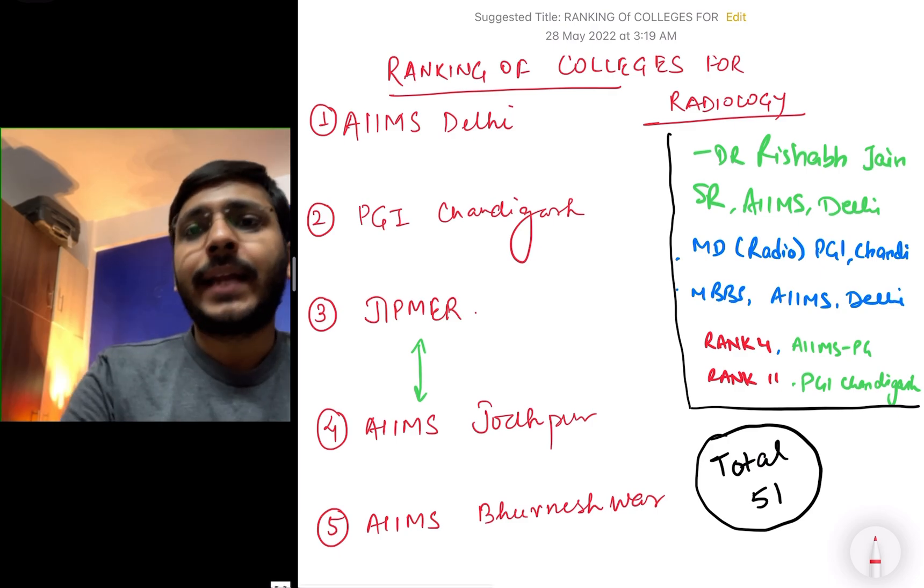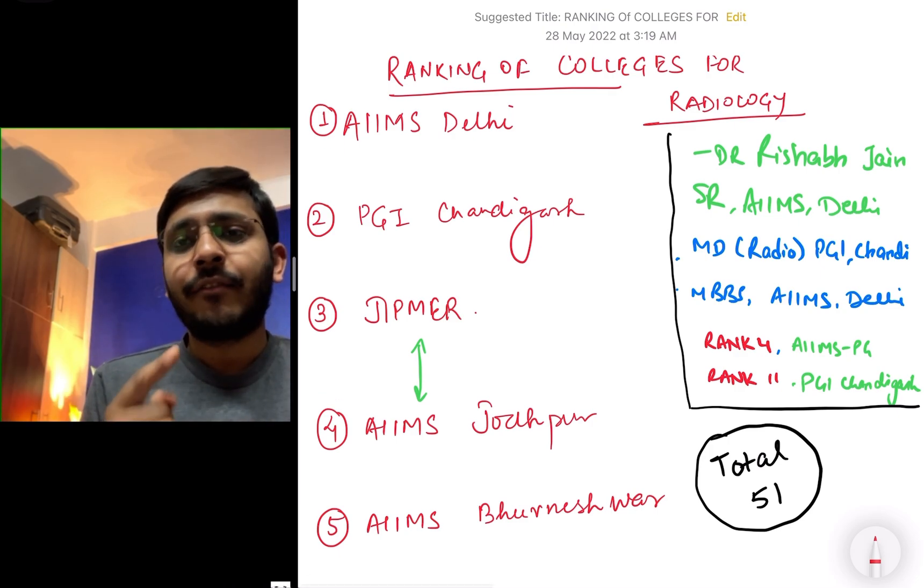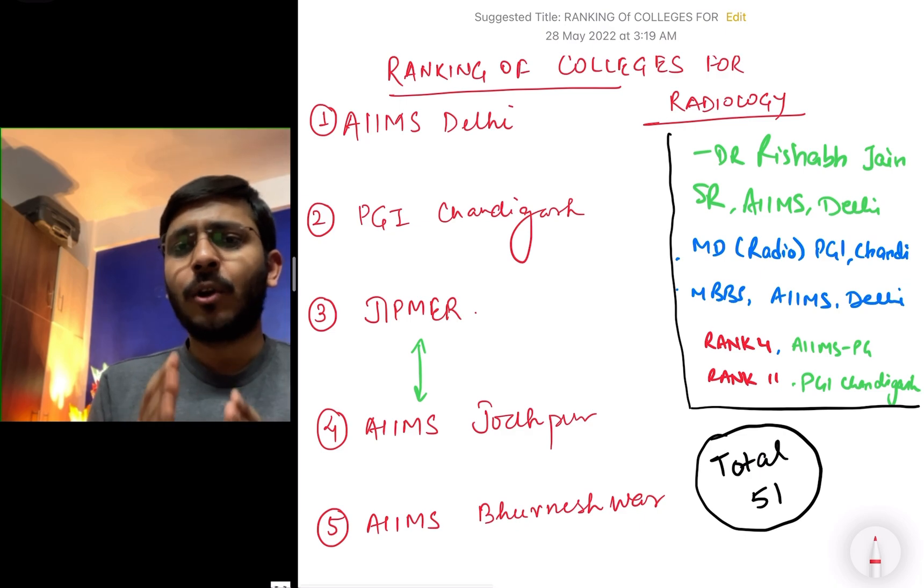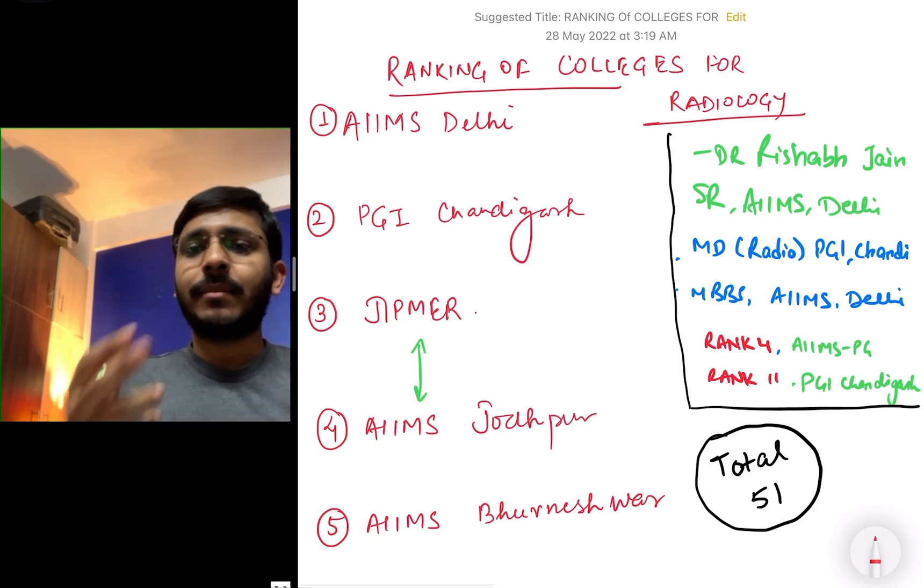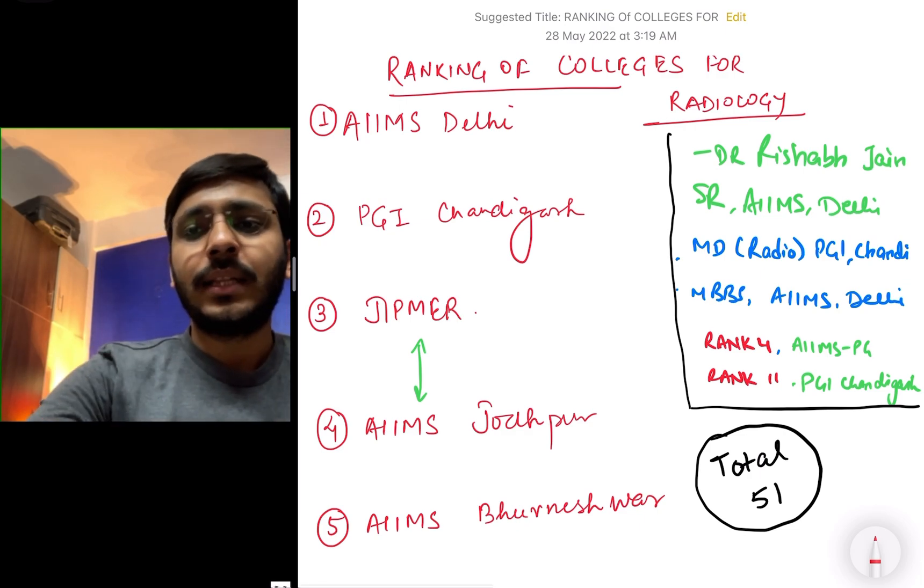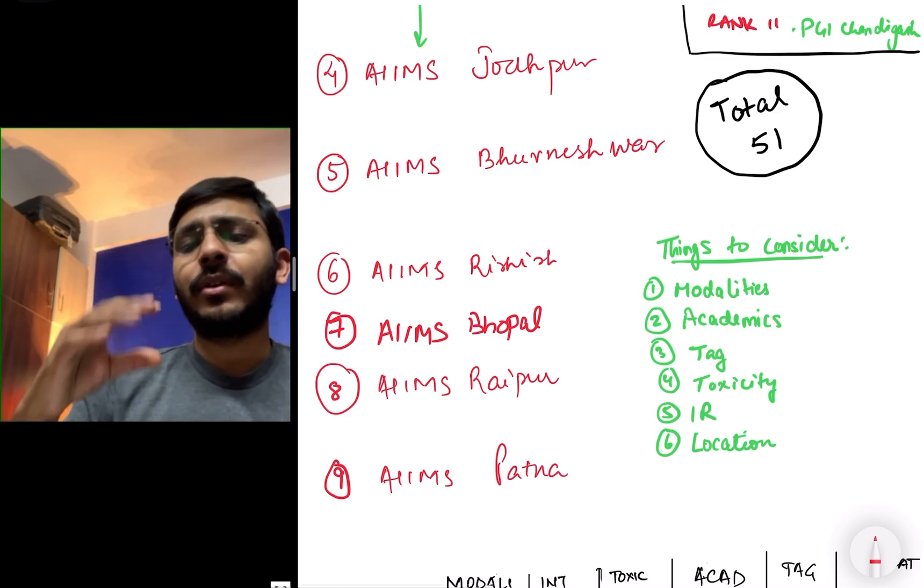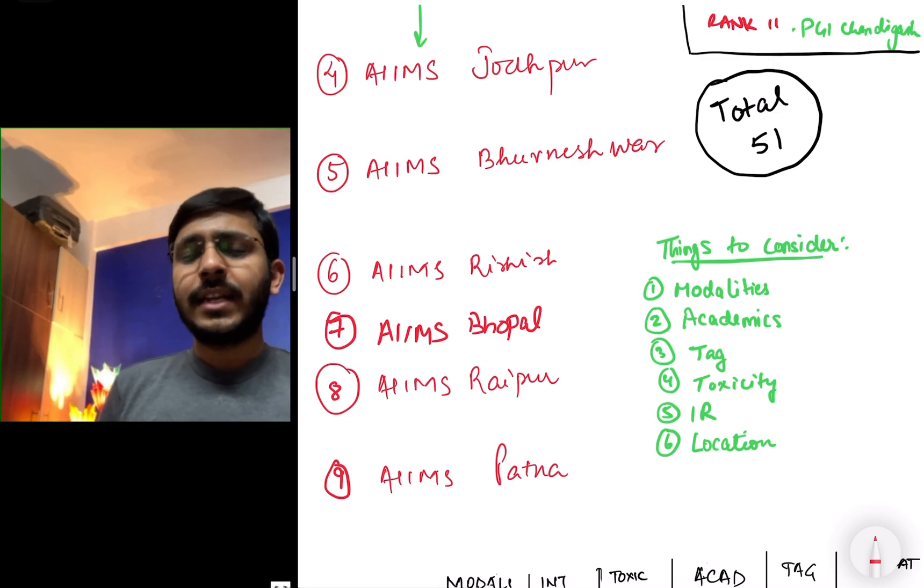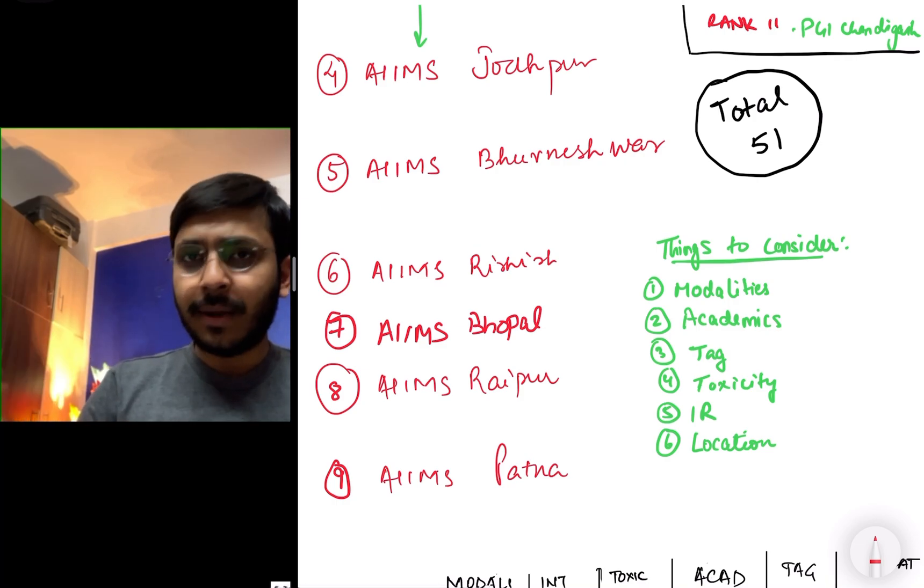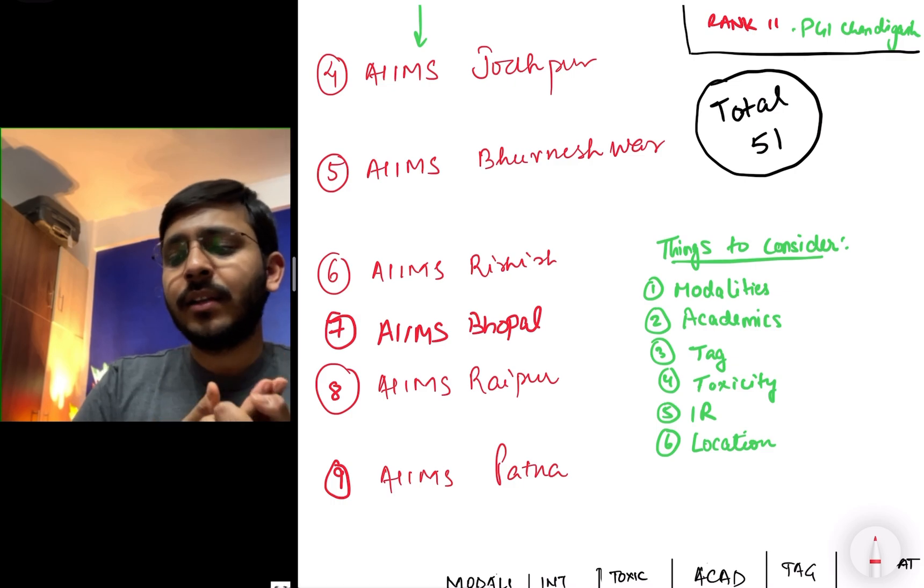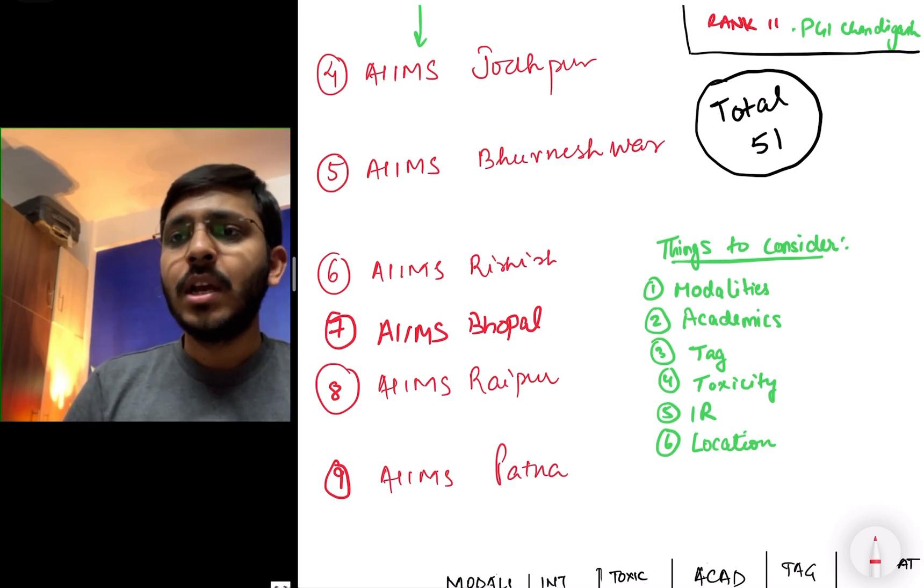According to me the ranking should be AIIMS New Delhi at first, followed by PGI Chandigarh, JIPMER which is almost equal to AIIMS Jodhpur, then AIIMS Bhubaneswar, AIIMS Rishikesh, AIIMS Bhopal, AIIMS Raipur, AIIMS Patna. The third generation AIIMS that have just come up in this counselling, namely Bibi Nagar, Patinda, Mangalgiri - the courses have just started and I frankly do not have any insights into what these courses are, so I haven't included these in this video.